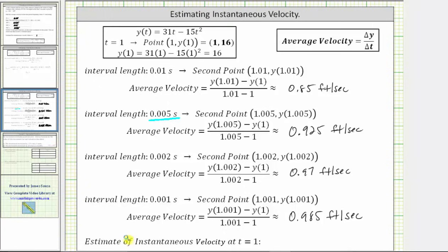From here, we're asked to estimate the instantaneous velocity at t equals one. Looking at the average velocities, as the time interval gets smaller and smaller and approaches zero, it does appear as if the instantaneous velocity is approaching the value of one. We will estimate the instantaneous velocity as one foot per second. In our homework, if the average velocities don't come out to nice values, you can round to four decimal places.